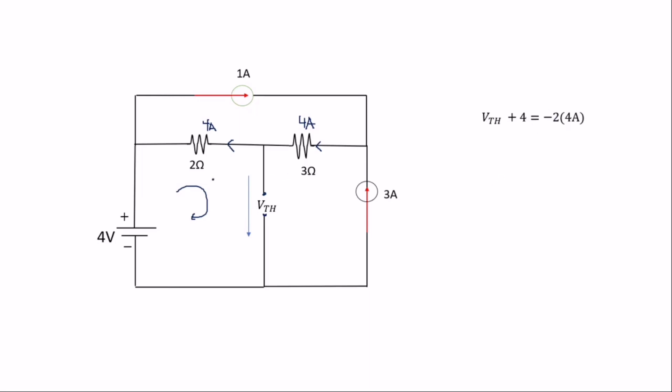When you solve that, you get the Thevenin voltage to be negative 12 volts. The negative sign simply indicates the direction you chose — it is not affecting the magnitude of the voltage. If you choose another direction, you will get positive 12 volts.